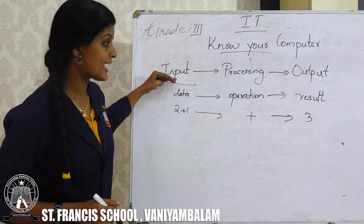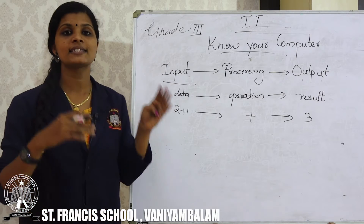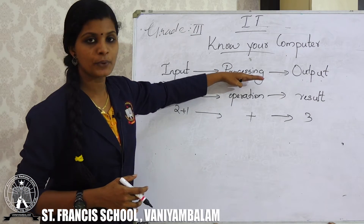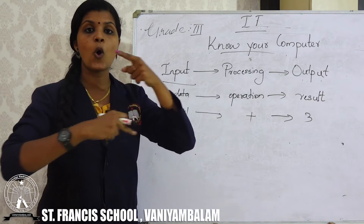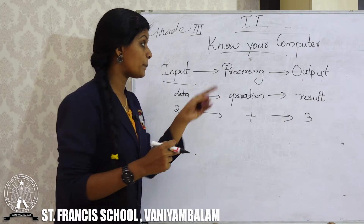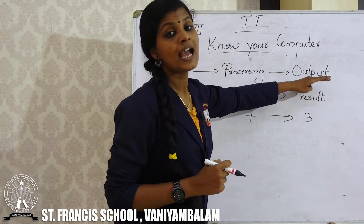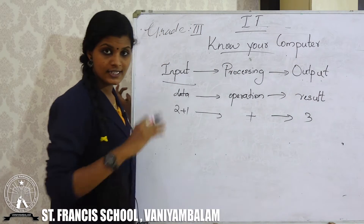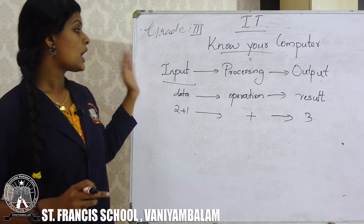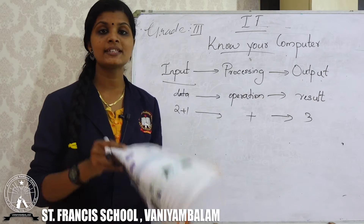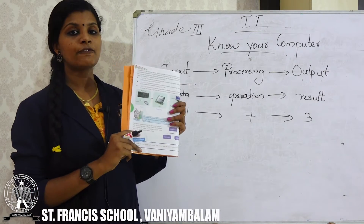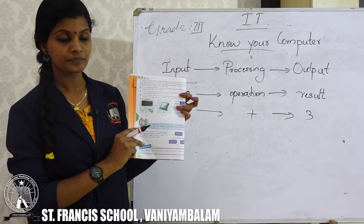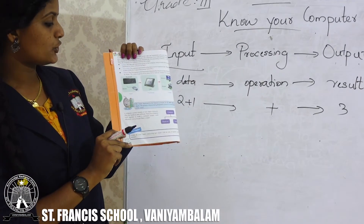Input is the first stage — that means we are entering data and instructions. After entering, it goes into the processing side where an operation will be done. After that operation, we will get a result, that is the output. These are the three steps. In your textbook page number 2, the definitions of input, processing and output are clearly given.